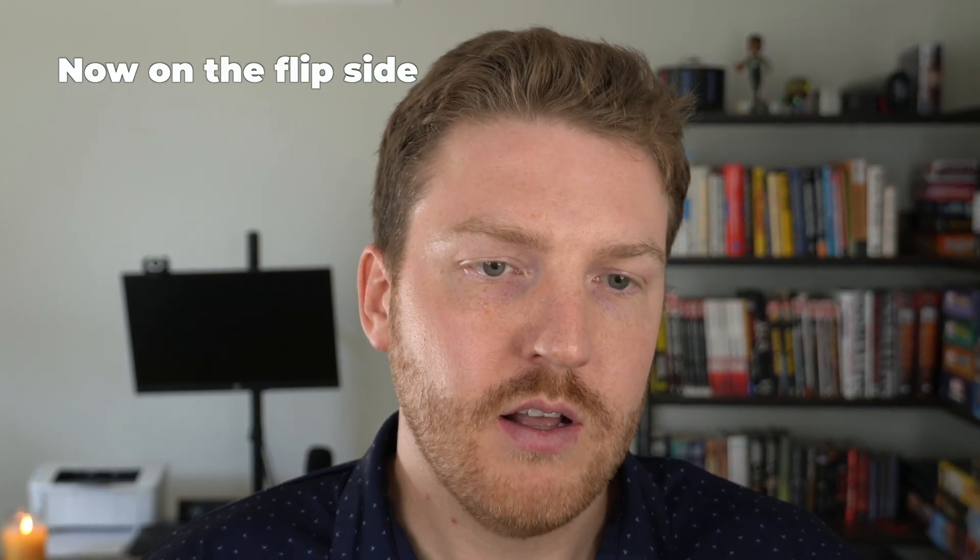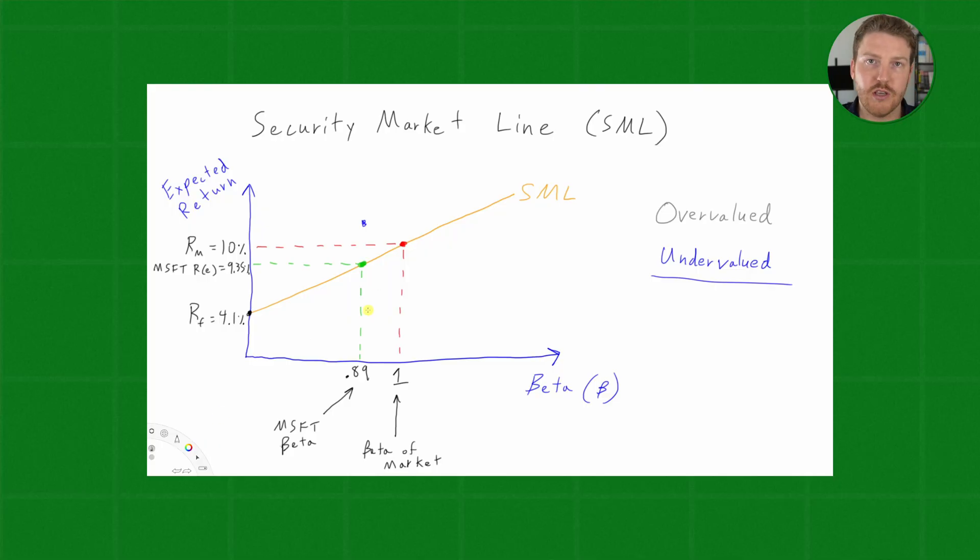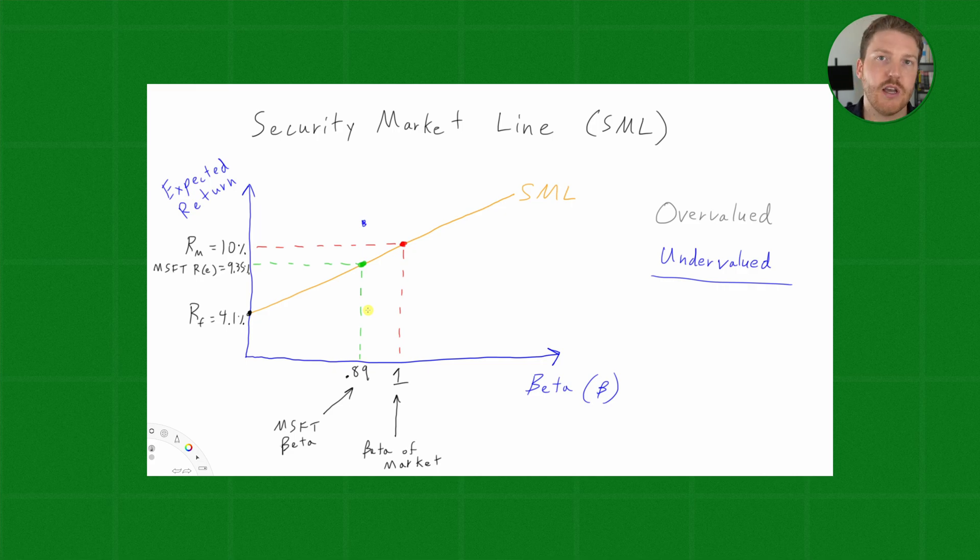Now, on the flip side of that, let's say that we actually figured out, after all these various calculations and estimates, we expect Microsoft to only return 6%. Now, while the beta is 0.89, so the risk hasn't changed, our expected return is actually less, which means we're getting less return for the same level of risk, which means that Microsoft, in this case, we would assume to be overvalued.